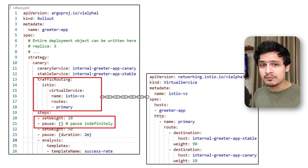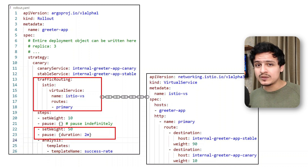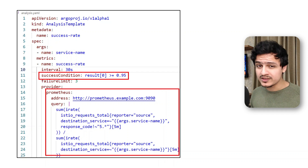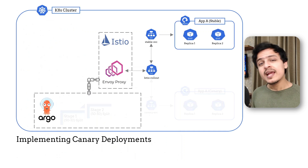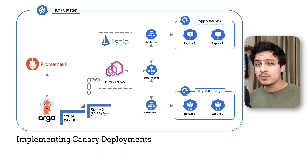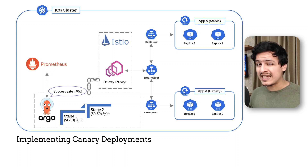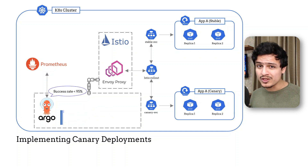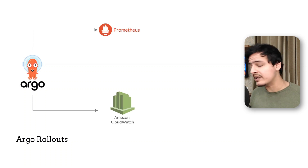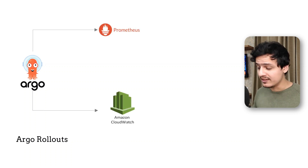You can then provide the steps or stages of your canary deployment. For example, starting with a 90/10 split which lasts indefinitely — if the canary performs well, you can manually promote the app to the next stage: a 50/50 split lasting two minutes. You can also run a background analysis job during these two minutes; Argo Rollouts will query Prometheus to check the error rate of the canary version. If the error rate exceeds 5% or the success rate drops below 95%, the analysis fails and Argo Rollouts will automatically roll back. Argo Rollouts supports integrations with Prometheus, AWS CloudWatch, and others to run such analyses.